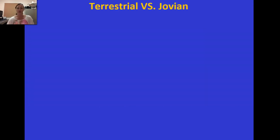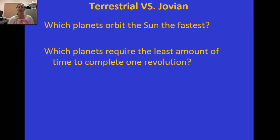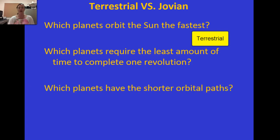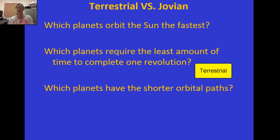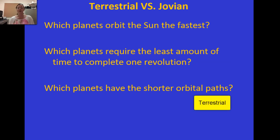Comparing terrestrial versus Jovian planets: Which planets orbit the sun the fastest? The terrestrial planets. Which planets require the least amount of time to complete one revolution? Again, the terrestrial planets — they're closer to the sun. And which planets have the shorter orbital paths? Once again, the answer is the terrestrial planets.